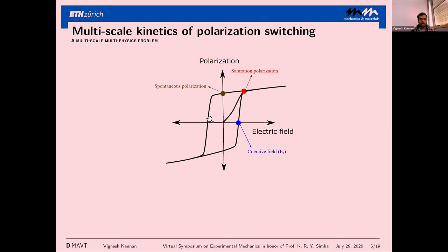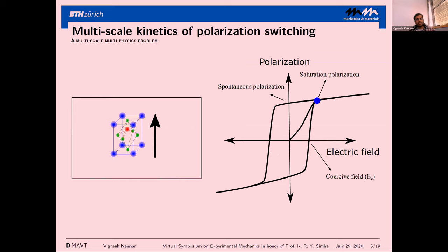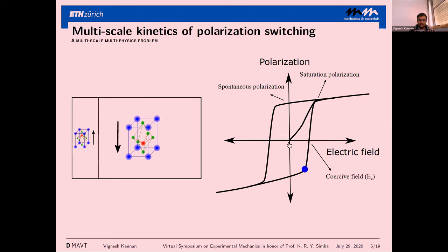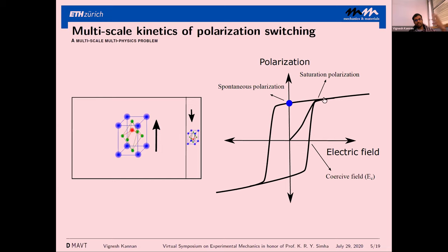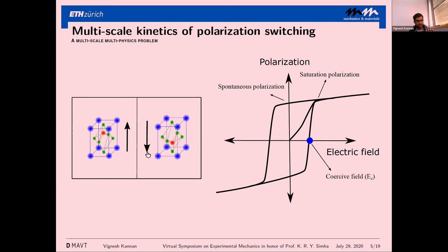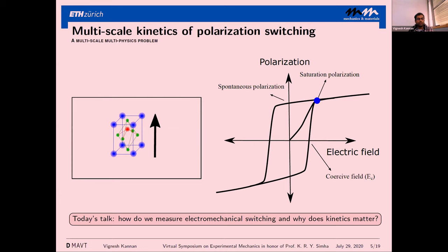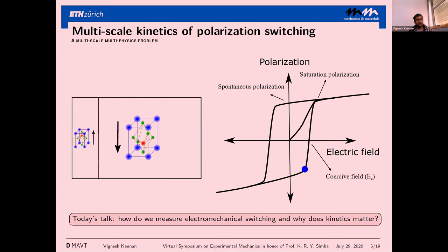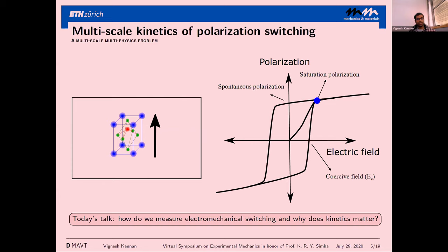Linking the macroscopic and mesoscale process: this cartoonistic description starts at a point with a distribution of domains. You pole it to get an idealized single crystal, and as you cycle through the hysteresis curve, you have this motion of defects that propagate back and forth. Today's talk focuses on understanding the experiment we've devised to study ferroelectric switching and why the idea of kinetics at the mesoscale matters.